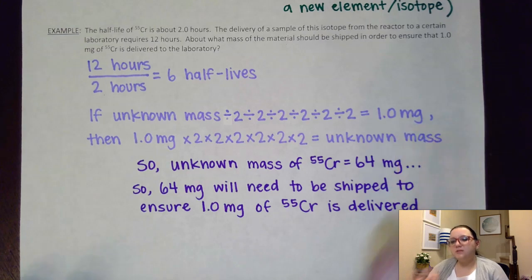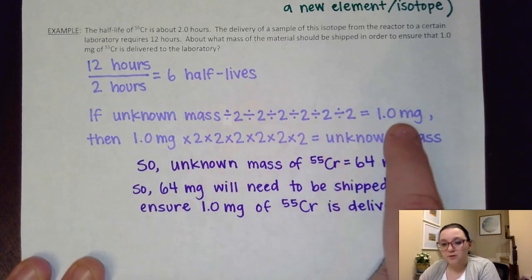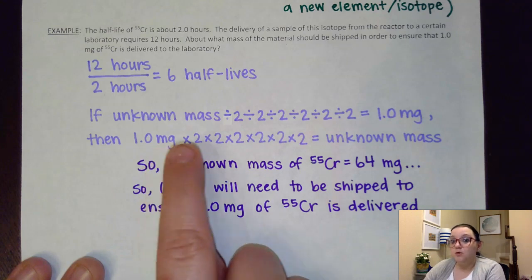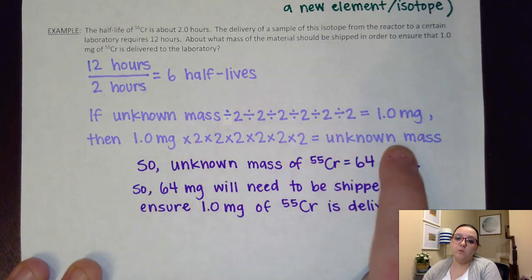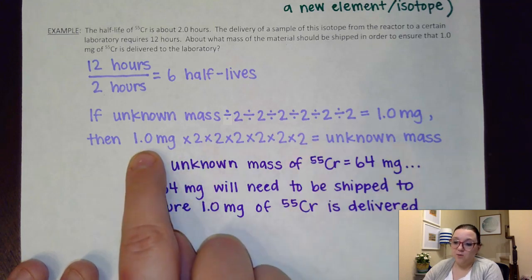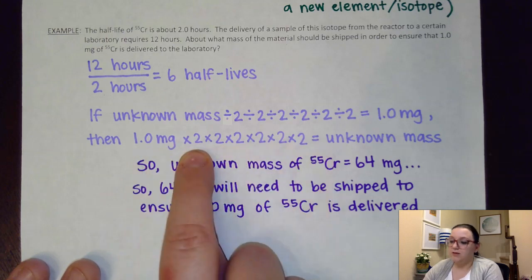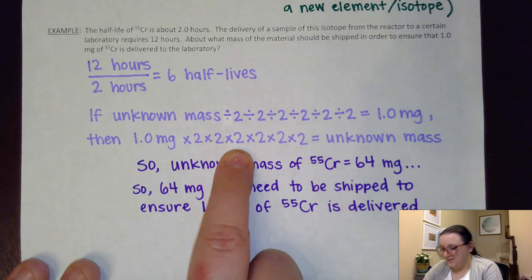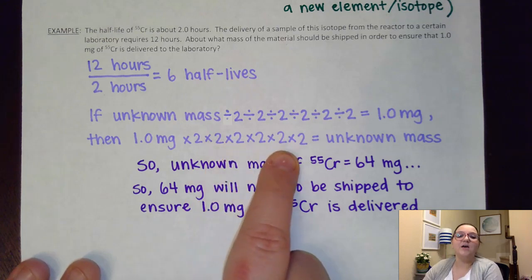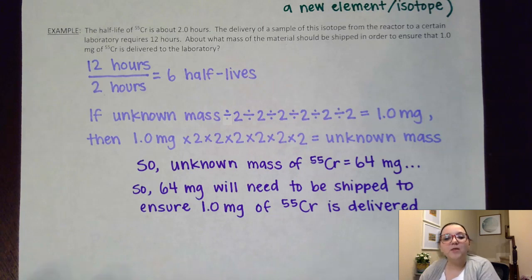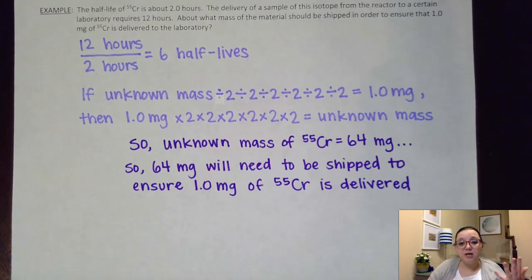If I want to solve for that unknown mass, I would kind of think backwards. If dividing all of that would equal one milligram, that means taking the one milligram and multiplying by two six times would equal my unknown mass. So basically I'm going to take that one milligram and continually double it six times. Doubling it once is two, doubling again is four, doubling again is eight, doubling again is 16, doubling again is 32, doubling again would get me 64 milligrams. So what that means is that 64 milligrams will need to be shipped. So that way when it gets halved six times over that 12-hour period, that would ensure that one milligram of that isotope is delivered at the end.